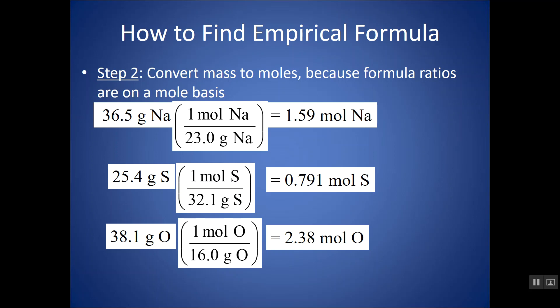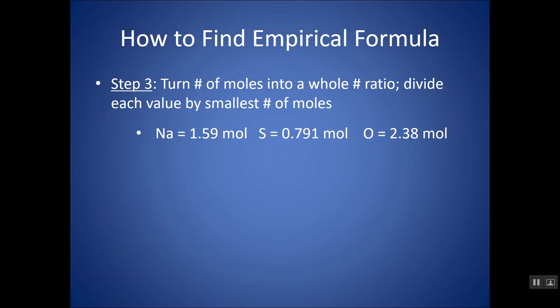So essentially, these numbers are our subscripts. They're representing our ratios. For every 1.59 moles of sodium, I get 0.791 moles of sulfur, and I have 2.38 moles of oxygen. But do we like looking at a formula like this? No, we need whole number ratios.